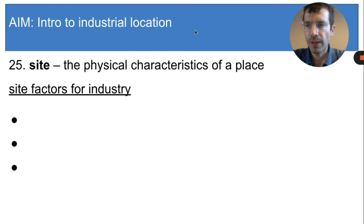There are a few factors that influence where a factory gets built, and the first three of them are grouped under the title of site factors. You might remember from unit one that site refers to the physical characteristics of a place, and usually site means things like climate, landscape, or resources.